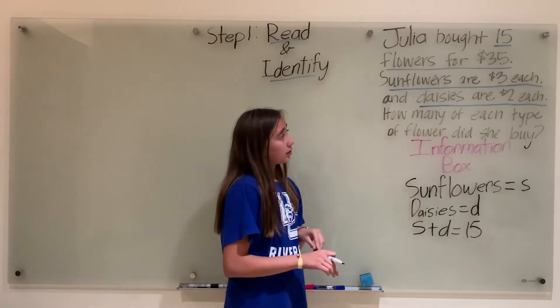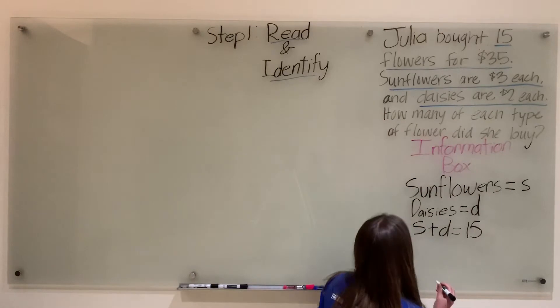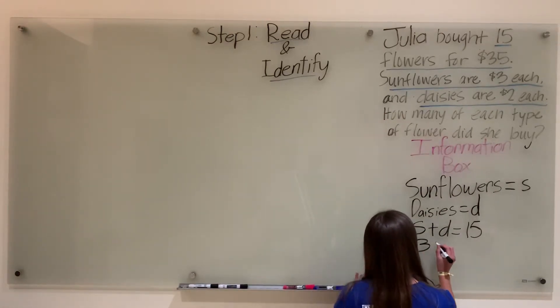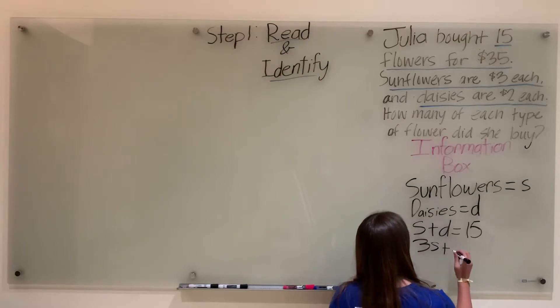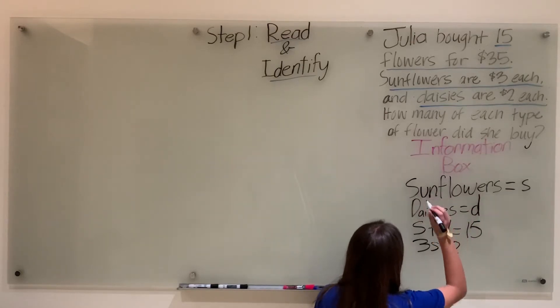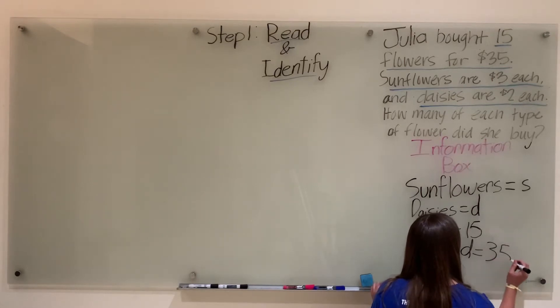If sunflowers are $3 each and daisies are $2 each, what we've reduced from that is $3 times the amount of sunflowers plus $2 times the amount of daisies, because daisies are $2 each and sunflowers are $3 each, equals $35. So we don't write the dollar amount.